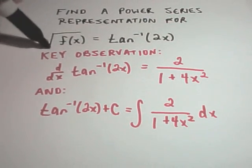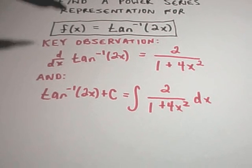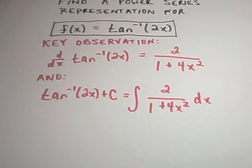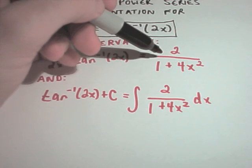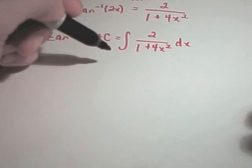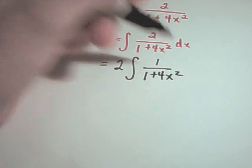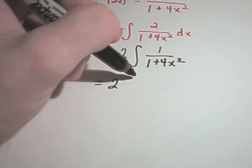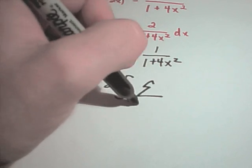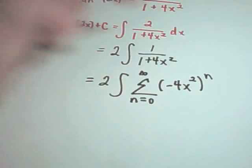In this case we want to find a power series representation for arctangent of 2x. Just like in the last one, the key observation is that if you take the derivative of arctangent of 2x, you'll get 2 over the quantity 1 plus 4x squared. If you integrate that, you get right back to the original function up to a constant. So I can pull the 2 out front and have 1 over 1 plus 4x squared. And I can find a power series representation for 1 over 1 plus 4x squared — this is going to be the series from n equals 0 to infinity of the quantity negative 4x squared raised to the n power.